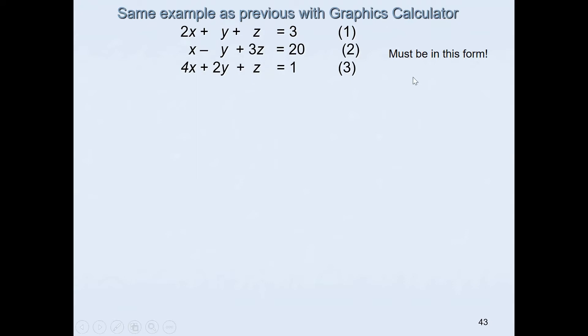The first thing you need to make sure is that the equations are given in this form: AX plus BY plus CZ is equal to D. That means after the equal sign you should have a constant and we have variables on the left hand side of the equal sign.